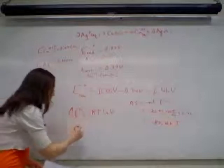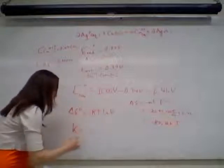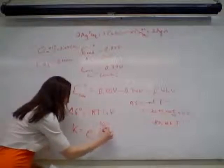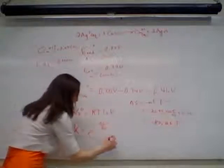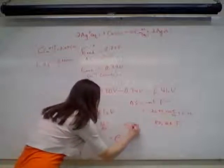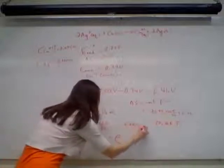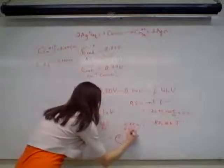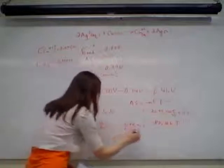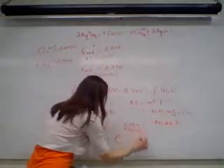So again, rearranging this equation, we know that equilibrium constant equals e to the negative delta G naught over RT, and so that means that K equals e to the negative, negative 88,766, so make sure you put that in as the negative, and that's 8.314, that's the constant R in joules per mole Kelvin, and then that's 298 Kelvin.